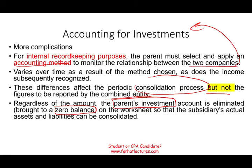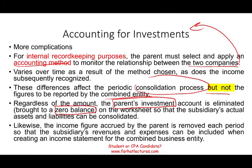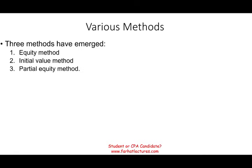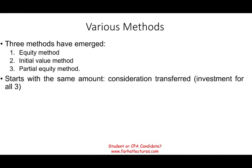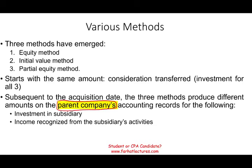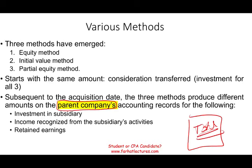There are three methods: the equity method, the initial value method, and the partial equity method. All three methods start with the same investment account, representing what we paid for the company initially — recorded at historical cost, which is the consideration transferred. After the acquisition, the three methods produce different figures on the parent company only, not on the consolidated sheets. The parent may show a different investment account balance, different income recognized from subsidiary activities, and therefore different retained earnings. But on the consolidated total, it doesn't matter which method is used — they all should produce the same result.